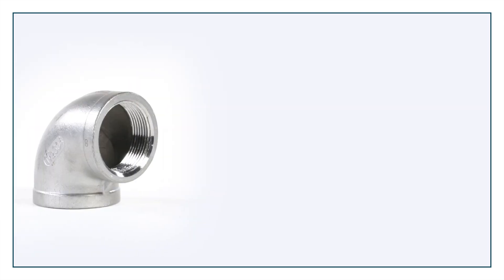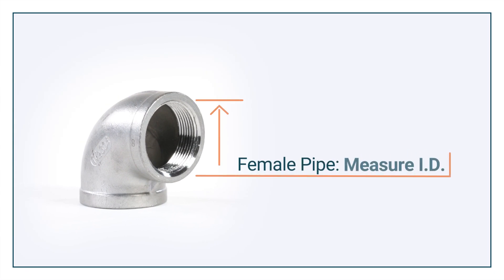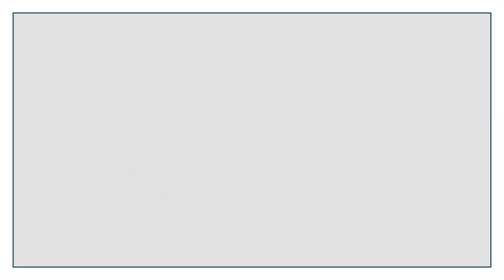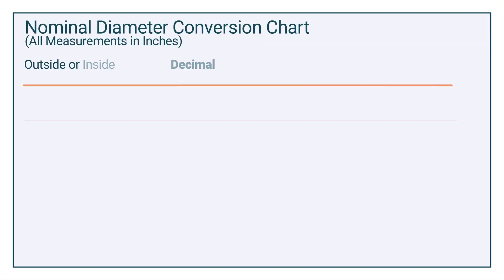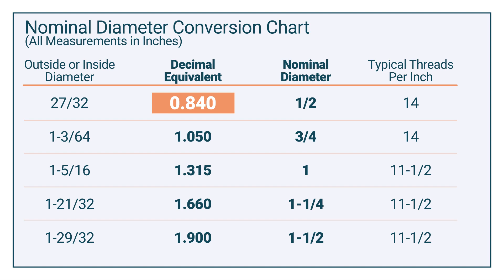For pipes with female threads, measure the inside diameter, or ID, of your pipe or pipe fitting. Follow the same process as before, using the chart to find the nominal diameter of the female pipe.